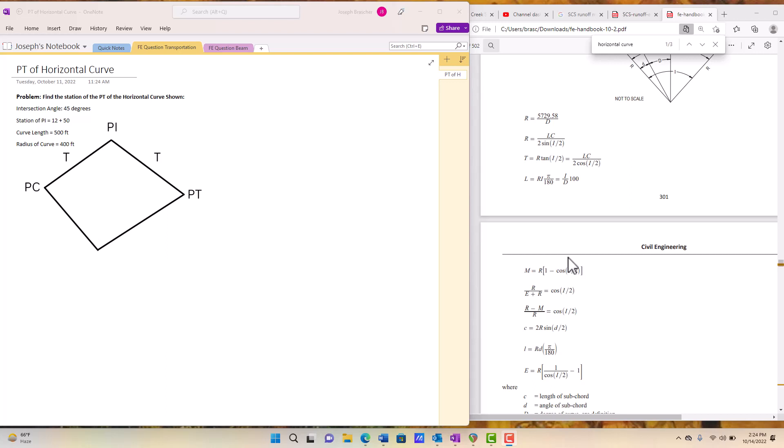Now we're going to dive into this problem. The problem statement is find the station of the PT of the horizontal curve shown given the following information.